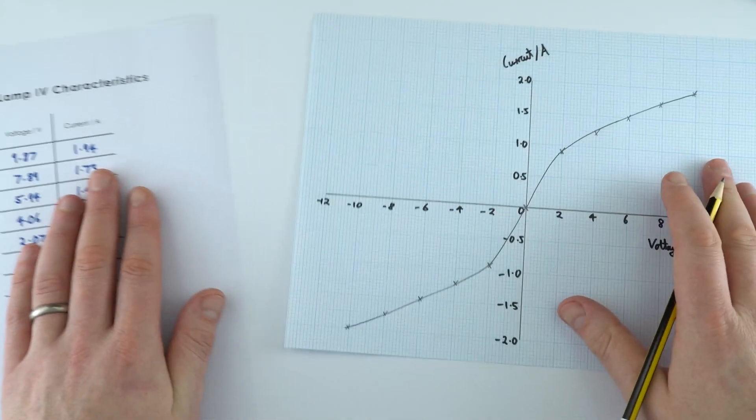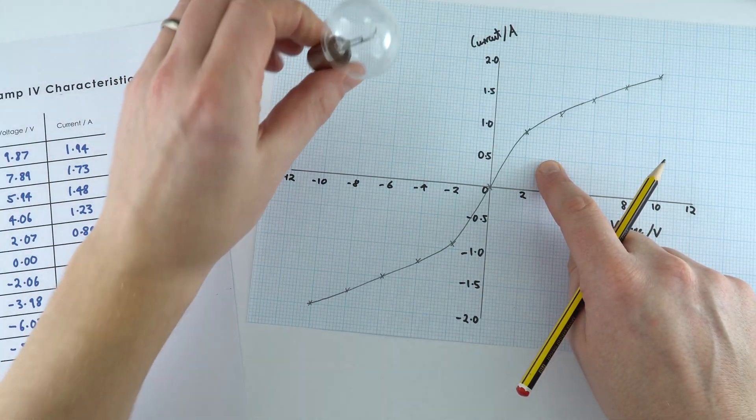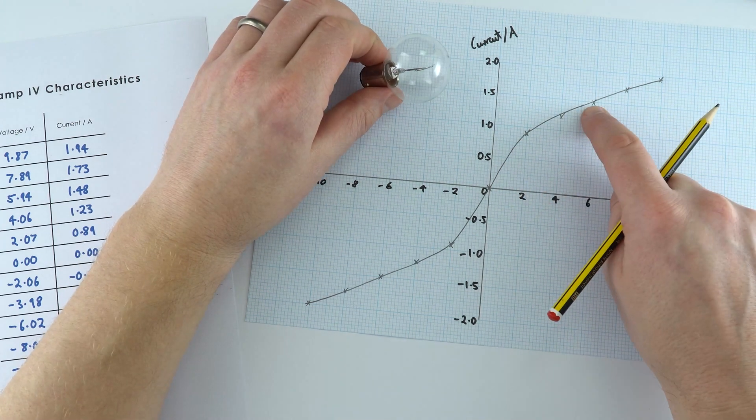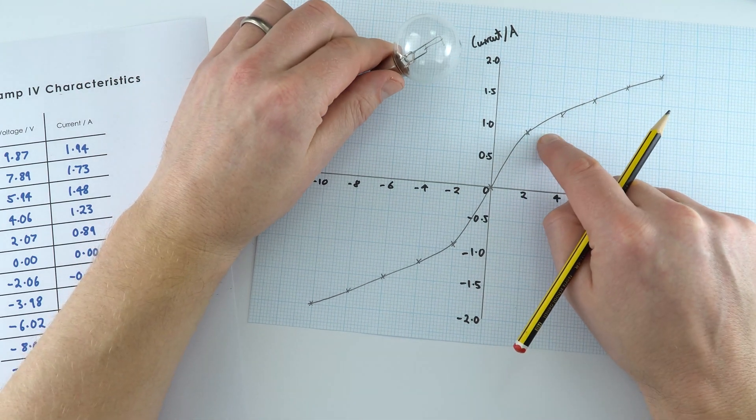Okay so that is my line of best fit for a filament lamp and what we can see is that we don't have a straight line and that means we don't have a constant resistance.